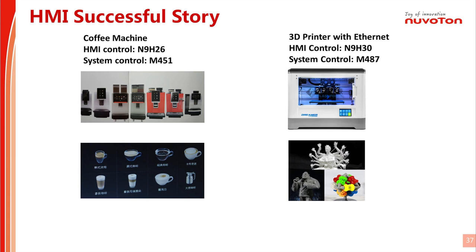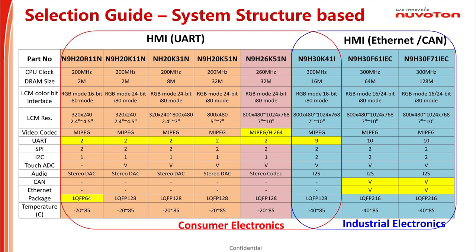Both successful stories are based on system structure 1. The benefit of this structure is to make the system function stable. The product selection guide allows engineers to decide which part number to use based on display resolution, display interface, and other specifications. For consumer electronics, engineers could use the part numbers in the red rectangle. For industrial electronics, engineers could use the part numbers in the blue rectangle.